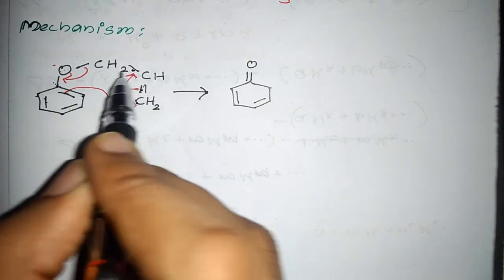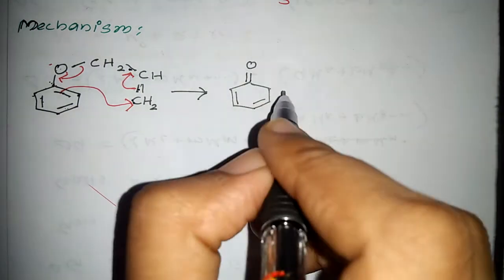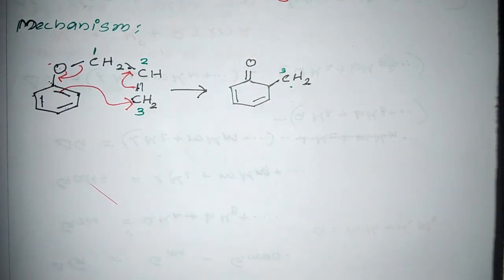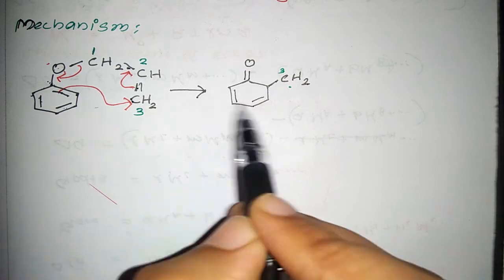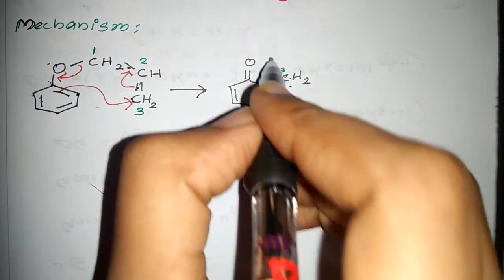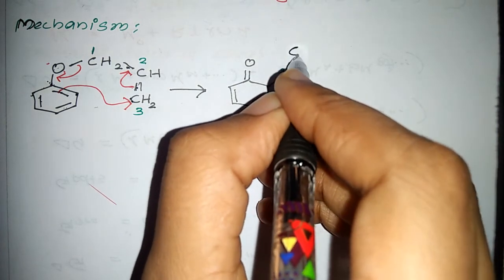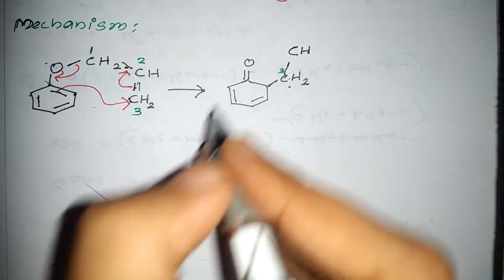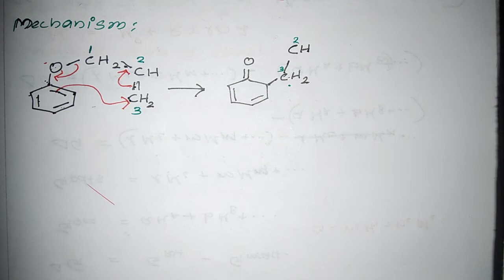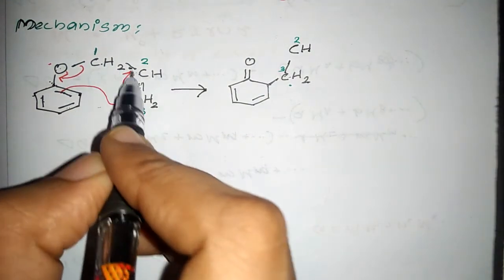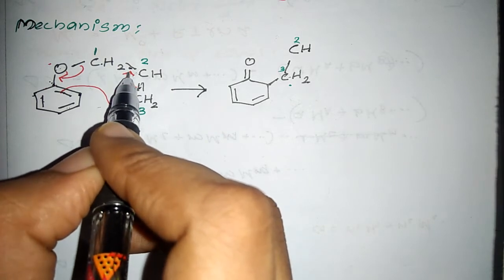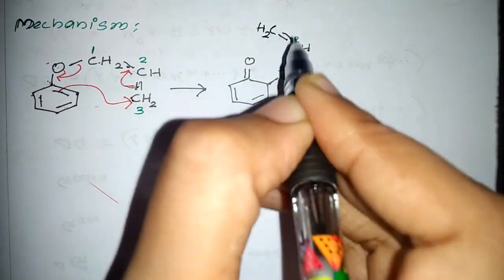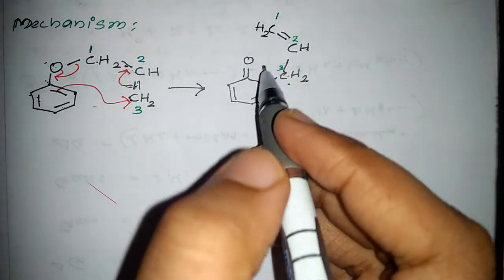This double bond is formed into a single bond. This double bond is formed into a double bond again. This is the CH2. This is C1. This bond is created as a single bond, and this bond is chosen as a single bond — part of this is the single bond. Now the bond will shift — it's a double bond. CH2, this is the third carbon.